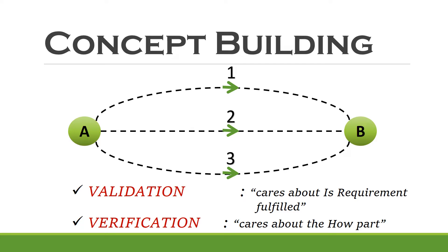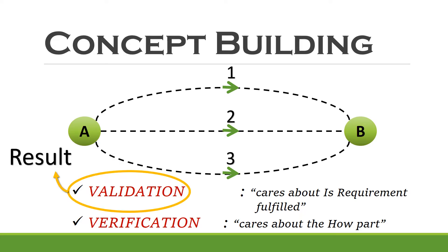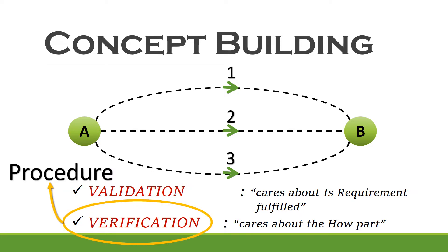There is another aspect of this, where we question how we are reaching point B — it could be route 1, 2, or 3. Examining this 'how' part is called Verification. So in simple terms, the focus during Validation is on the Result, and during Verification, the focus is on the Procedure.